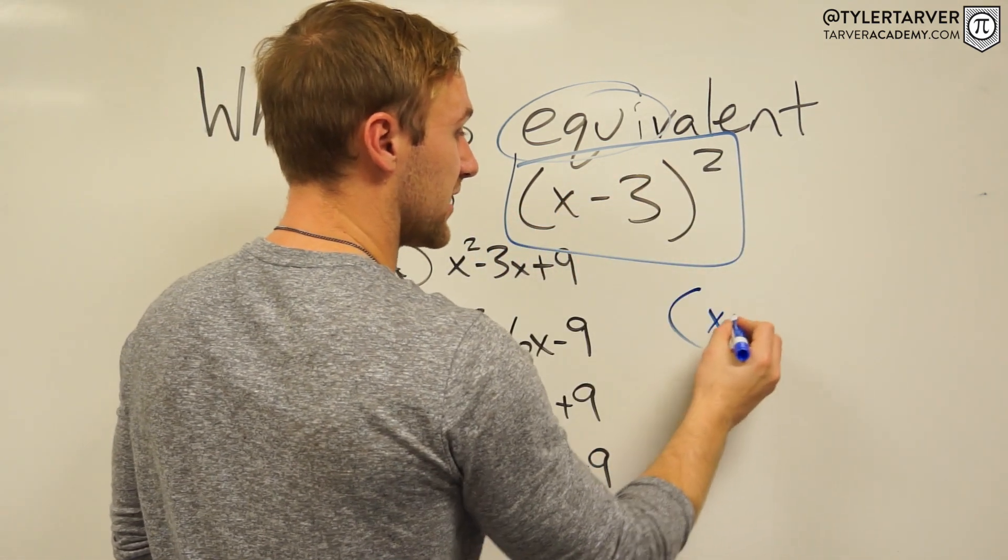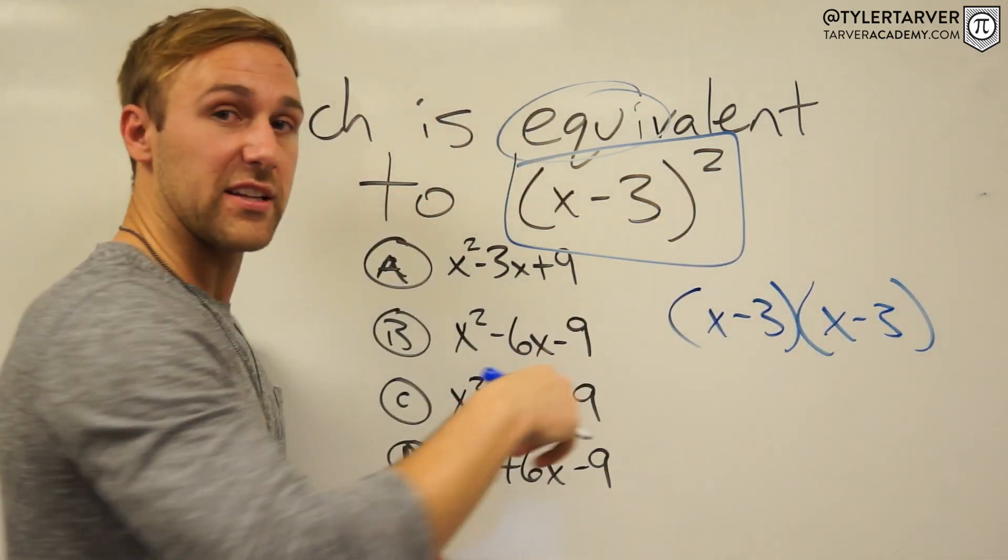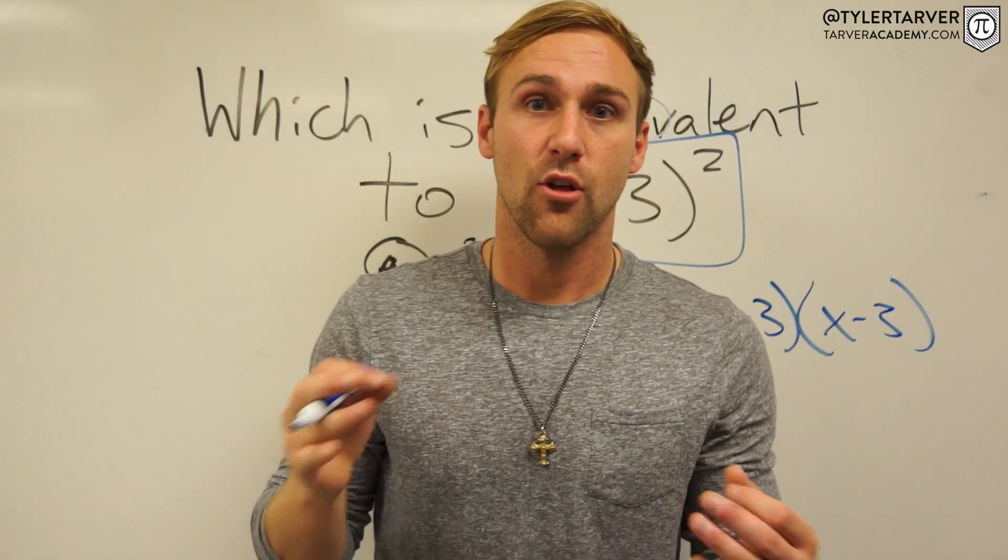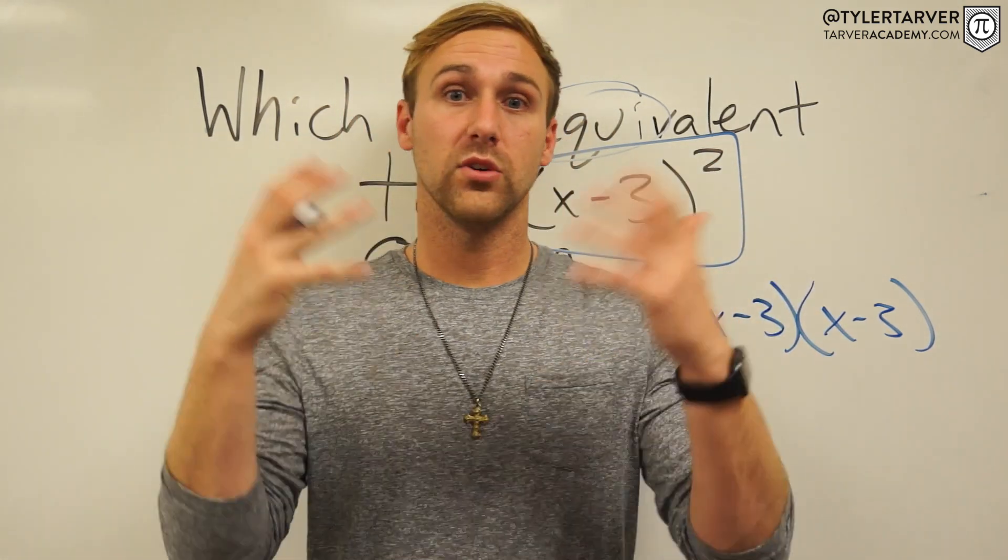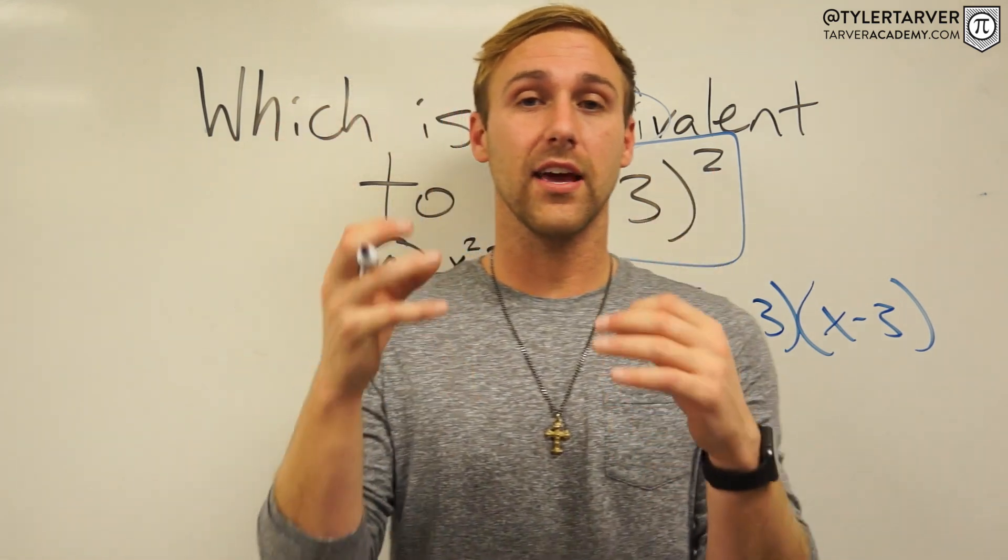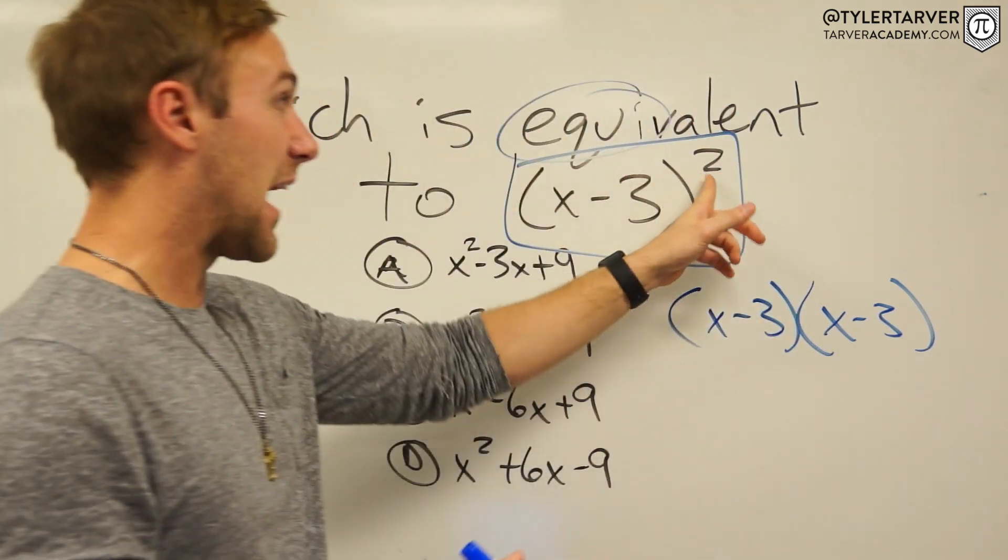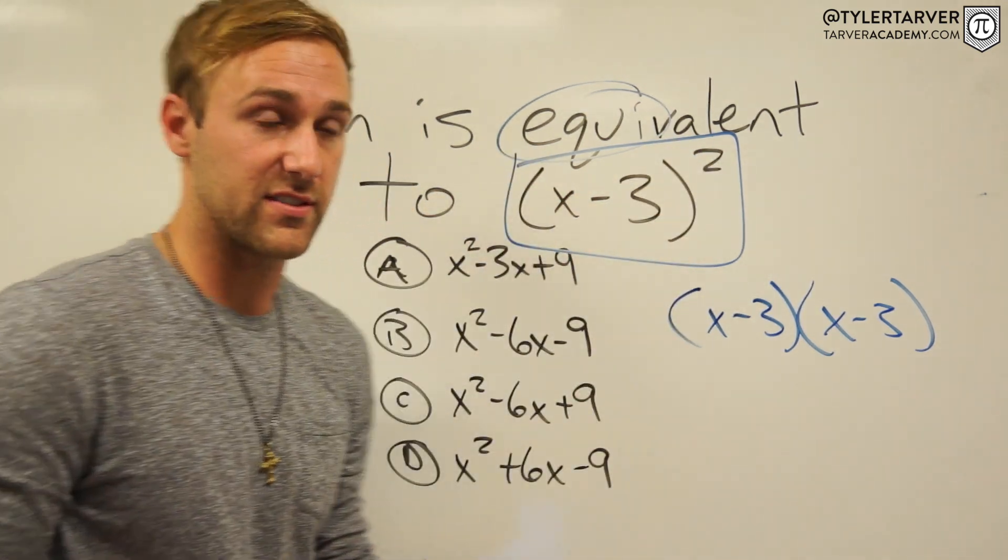So we've got (x - 3) times (x - 3) because squared means something times itself. Like you have 3², it'd be 3 times 3, which would be 9. Or 10², 10 times 10 is 100. Anything squared is times itself. And since this is outside the parentheses, I have to include everything inside the parentheses, so I'm going to multiply it times itself.